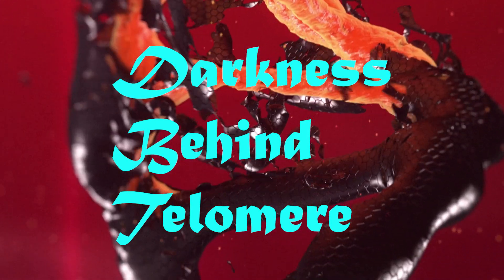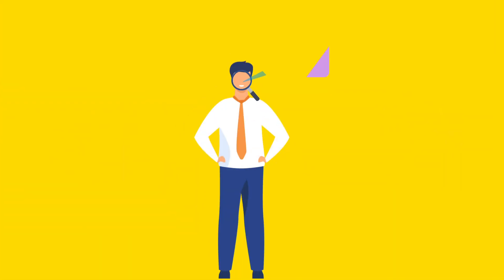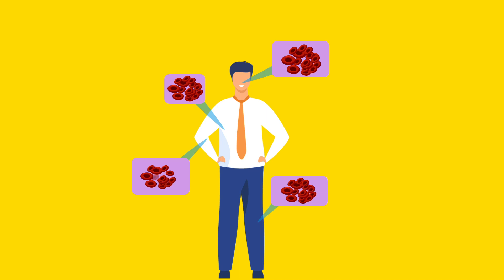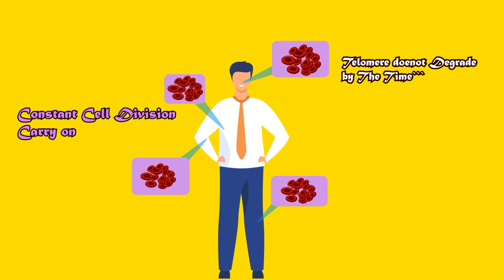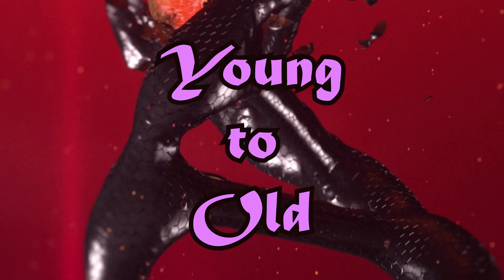The telomere also plays a role in cancer control. The telomere controls how much a cell can divide. If the telomere-based control on cell division is lost or not maintained properly, cancer can increase. The telomere essentially limits uncontrolled cell growth.